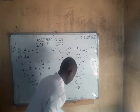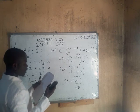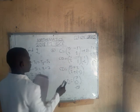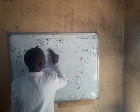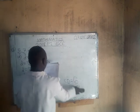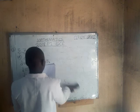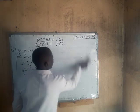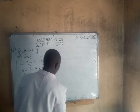For Part B: find the sum of the first twelve terms of the arithmetic progression.